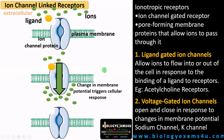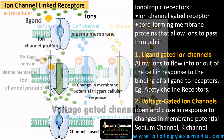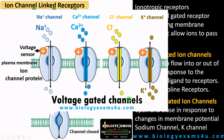In voltage-gated ion channels, the opening and closing of the ion channel is in response to changes in membrane potential. There is a voltage sensor attached to the ion channel protein, and changing voltage causes the opening of this channel. These channels include sodium ion channels, calcium ion channels, chloride ion channels, and potassium ion channels. The opening and closing of these channels is in response to change in membrane potential.